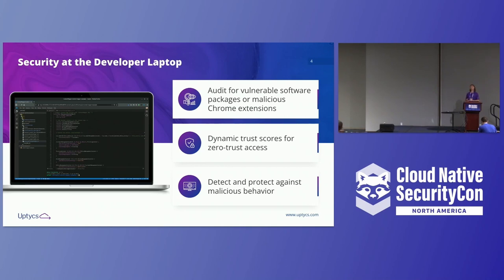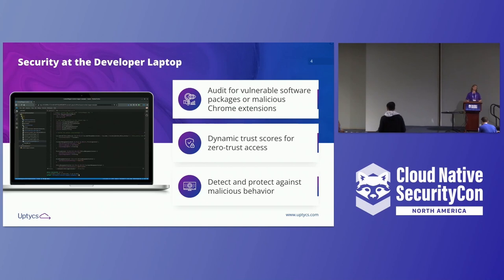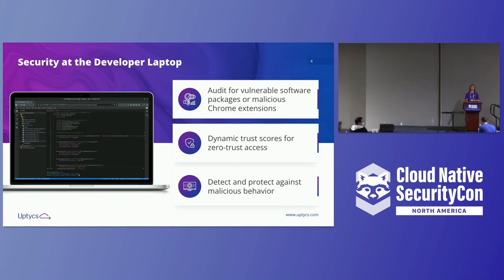Too often we focus on the shiny part of the hack where data gets exfiltrated or remote code gets executed. We need to look a little layer deeper. A developer laptop is like the perfect entry point for an attacker — they can enumerate your environment, see what tooling you have, try to steal Git SSH keys, try to steal AWS credentials. This is a really strong point we need to secure when we think holistically about our pipeline.